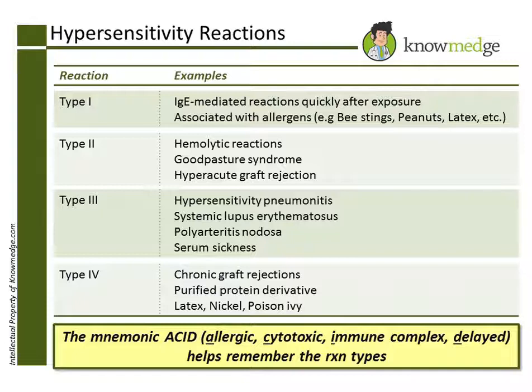Choice A: A patient with infectious mononucleosis has IgM cold agglutinin antibodies, and the hemolytic reaction is an example of a Type 2 hypersensitivity reaction.